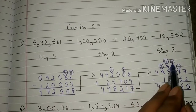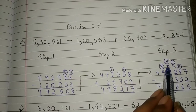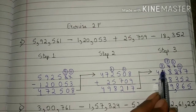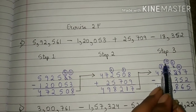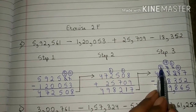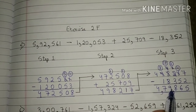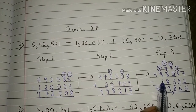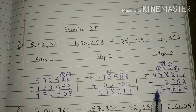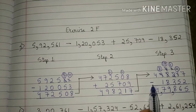11 minus 3 is 8. 7 is smaller than 8, so we will borrow one number from 9. Now 7 will become 17 and 9 will become 8. 17 minus 8 is 9. 8 minus 1 is 7. 4. The answer is 4,79,865. This is your answer.